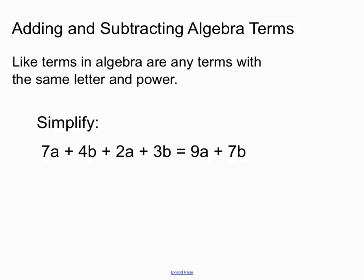So our final answer, 9a plus 7b. We've followed the rule and we've added together pairs of terms that have the same letter and power.